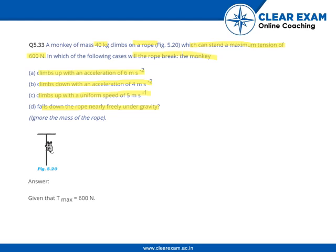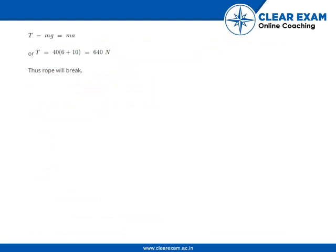We know that the maximum tension is 600 Newton. In the first case, we have the acceleration 6 meter per second square in the upward direction. Using Newton's law of motion, we can write that the tension is in the upward direction, the weight is acting in the downward direction, and the motion is in the upward direction. Therefore T minus mg equals mass into acceleration. We find out that T is 640 Newton's.